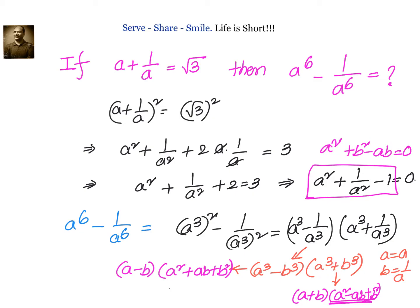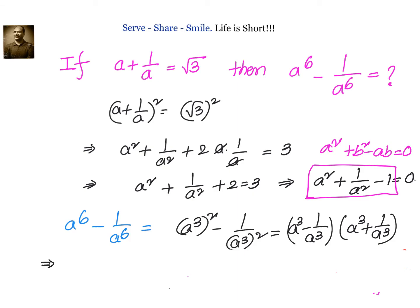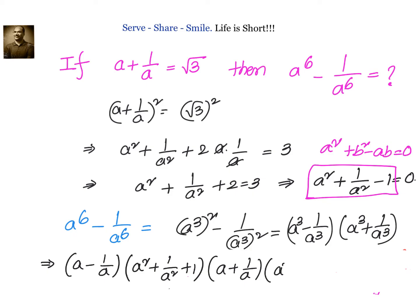Since one factor of the second expression is zero, everything will become zero. Our answer is zero. Writing it out: (a - 1/a)(a² + 1/a² + 1) · (a + 1/a)(a² + 1/a² - 1). We know that the term a² + 1/a² - 1 is equal to 0, so 0 times anything gives us 0. Our answer is 0.